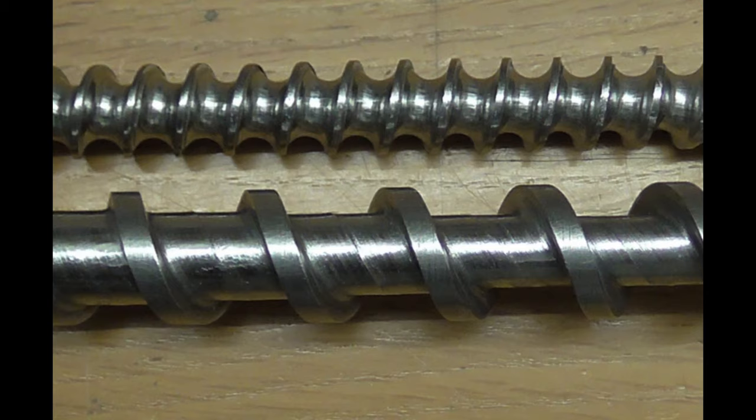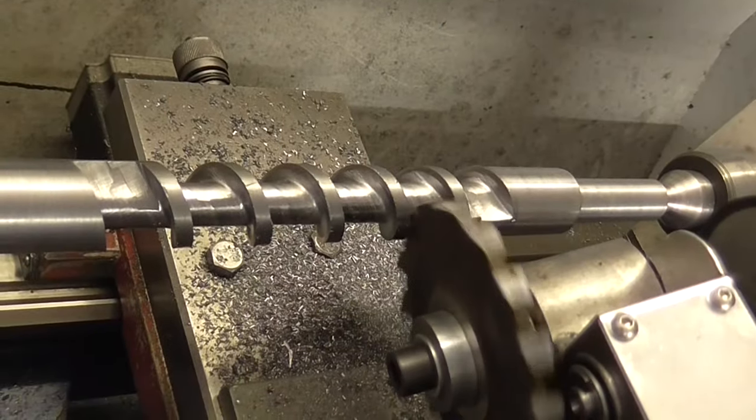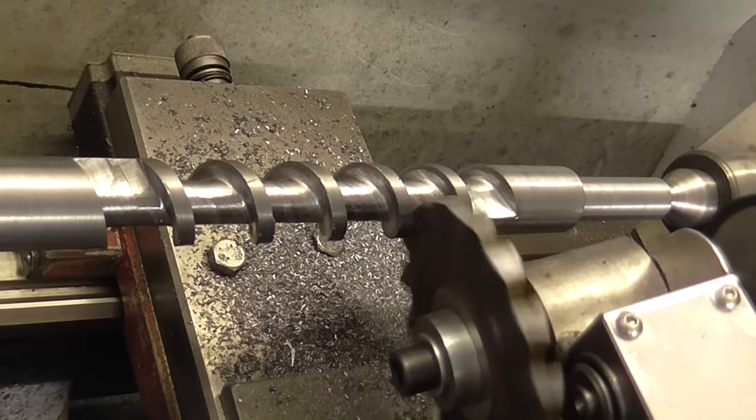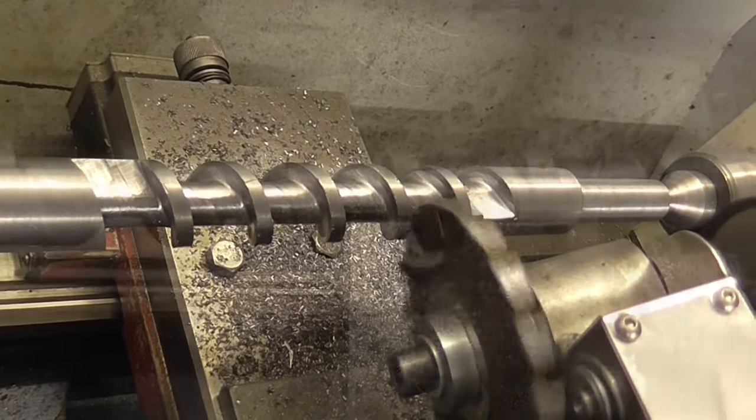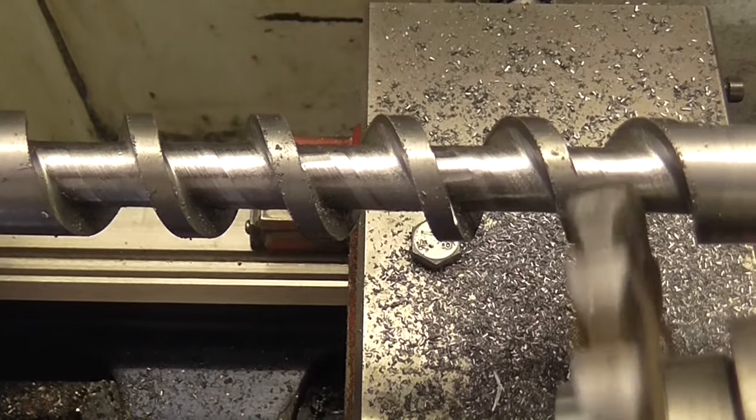To make a feed screw or screw conveyor, there are two main methods. You can start with a solid bar and machine away material, which takes a long time. I know.